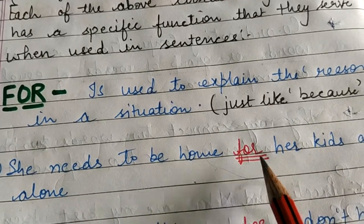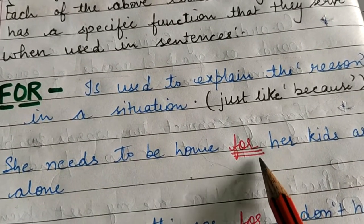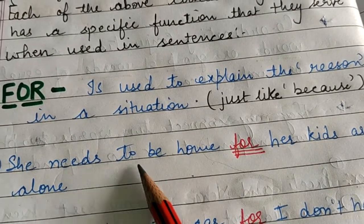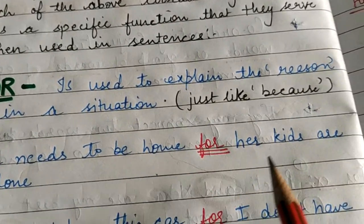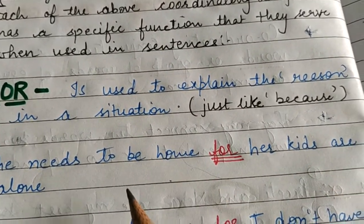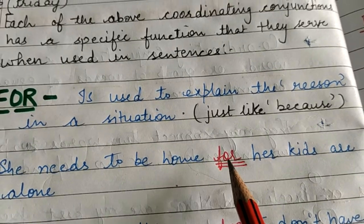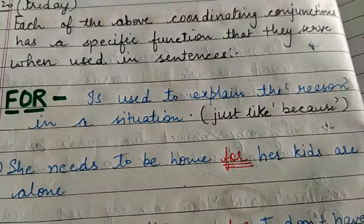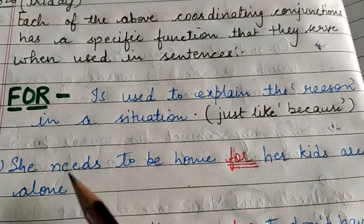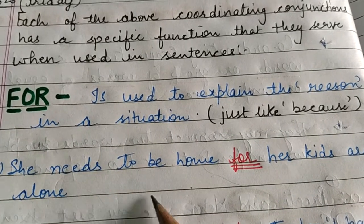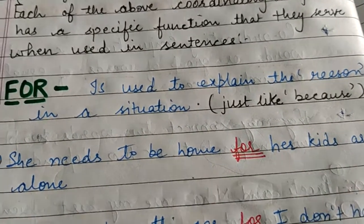'For' is used in the sense of 'because' — kyun ki. It is explaining the reason for her to be home. Why she needs to be home? 'For her kids are alone.' So 'for' is a conjunction used to explain the reason or purpose of the situation. What is the situation? She needs to be home. Why? For her kids are alone.